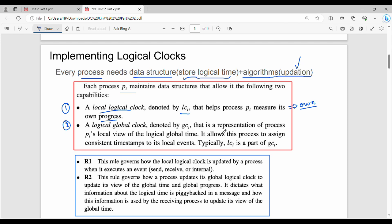A logical global clock, denoted by GC_i, is a representation of process P_i's local view of the logical global time. It allows this process to assign consistent timestamps to its local events. For example, P1, P2, P3 are three different processes.